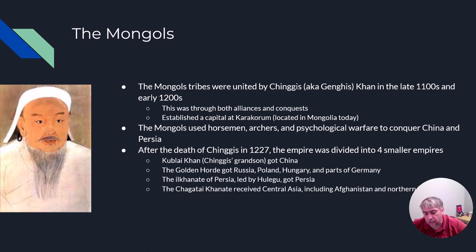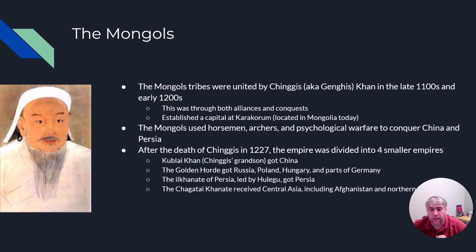The Mongol military was really big, especially for its day — it had over a hundred thousand soldiers in the early 1200s and was based on the decimal system, where each squad was a squad of ten soldiers. Military specialists were recruited from conquered lands. Soldiers were lightly armored, everything was based on speed, and each soldier had multiple horses so when one got tired they just swapped to a different one.